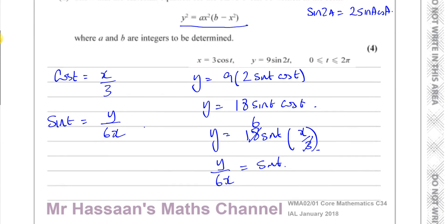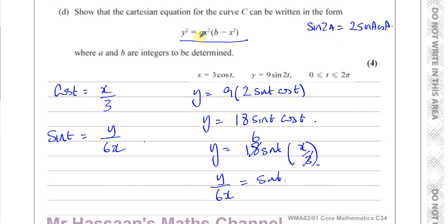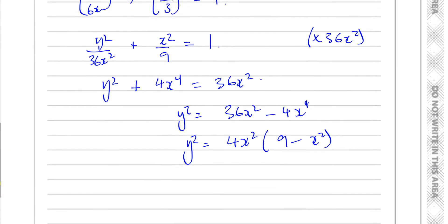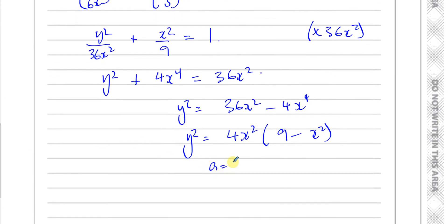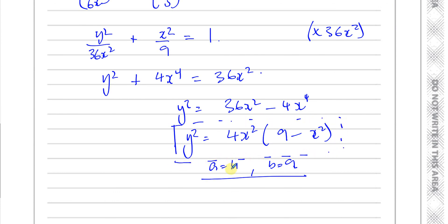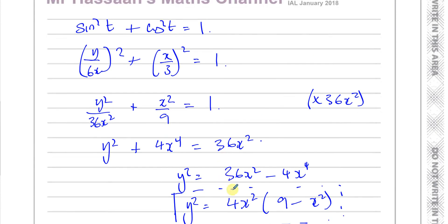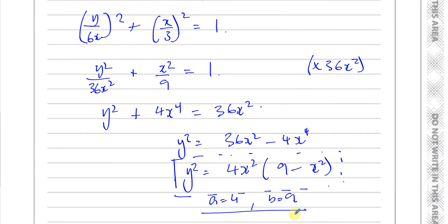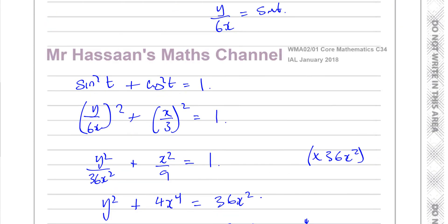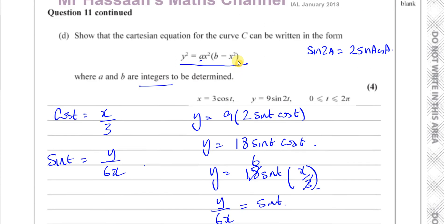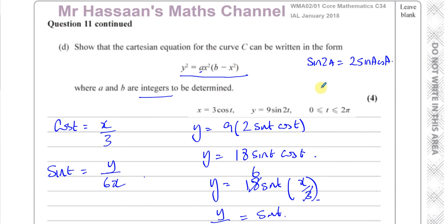So there's the answer. We can see the integers a and b: a equals 4 and b equals 9. You need to leave it in that form. It's more complete if you write the values of a and b, and we can be reassured that we're on the right track because they did turn out to be integers as required. That completes question 11 part D on parametric equations.